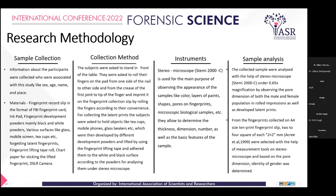For research methodology, the first step was sample collection. Information about participants — including age, sex, name, and place of residence — was collected. Materials used included fingerprint record slips, ink pads, and development powders for latent prints from surfaces such as glass, mobile screens, and teacups. Subjects were asked to stand at a table and roll their fingers on the ink pad from one side of the nail to the other, then repeat the same method on the fingerprint cards.